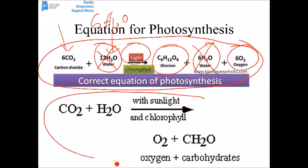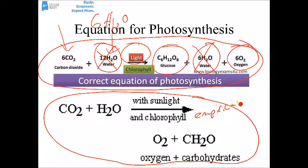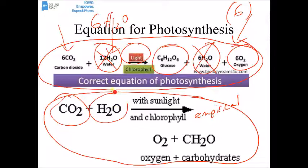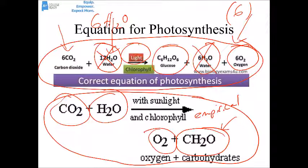The version of the equation at the bottom is essentially the empirical formula for photosynthesis — an empirical formula is one in which the formula has been reduced. We factored a 6 out of everything, leaving carbon dioxide, water, light, and chlorophyll as reactants, and oxygen gas and CH2O — one of the building blocks of glucose — as products. If you put six of these together you get 6C6H12O6. Know those equations for photosynthesis.